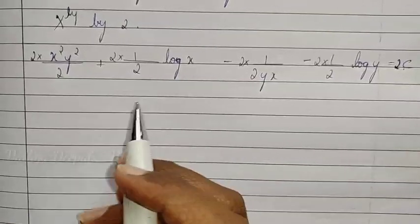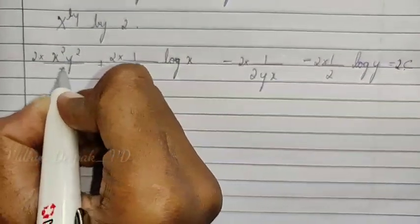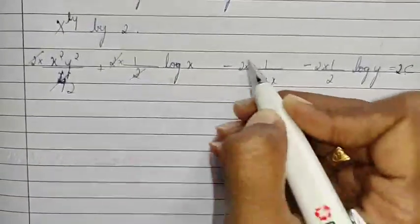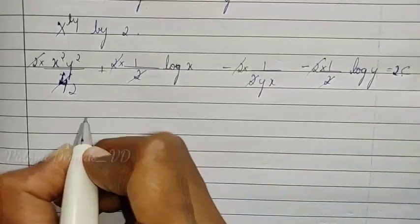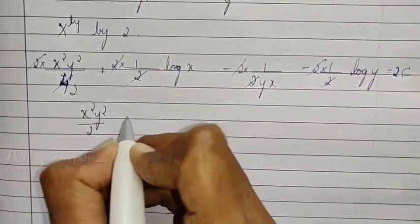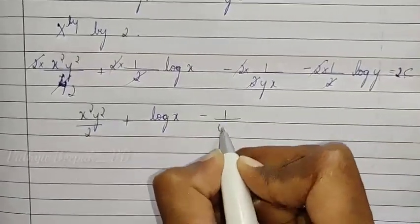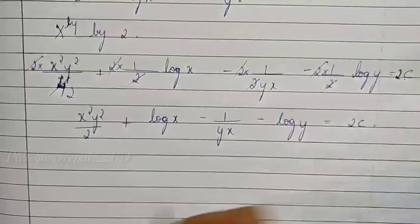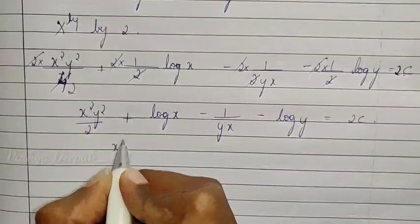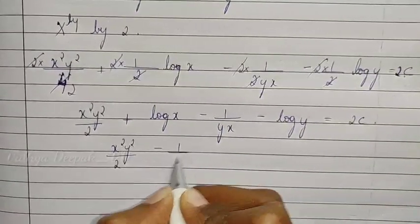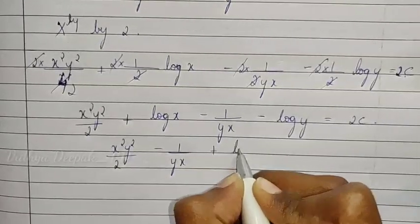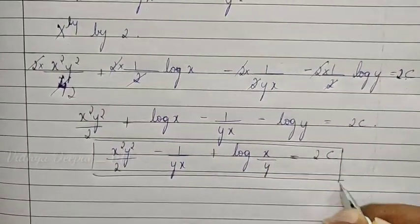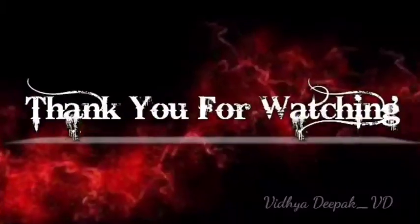Multiplying throughout by 2: 2 and 2 cancel throughout, giving x²y²/2 + log x − 1/(xy) − log y = 2c. Since log x − log y = log(x/y), the required solution is: x²y²/2 − 1/(xy) + log(x/y) = 2c. Thank you for watching.